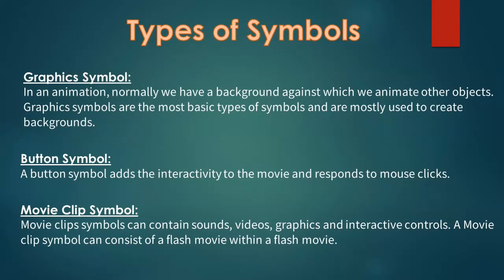A graphic symbol — in an animation we normally have a background against which we animate other objects. Graphic symbols are the most basic types of symbols and are mostly used to create backgrounds. Button symbols add interactivity to the movie and respond to mouse clicks.